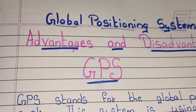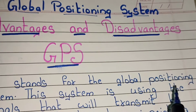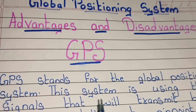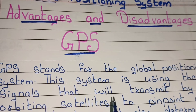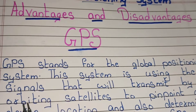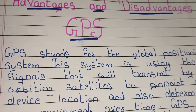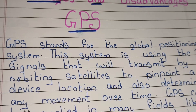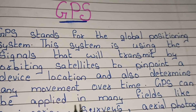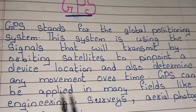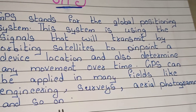GPS stands for the Global Positioning System. This system uses signals transmitted by orbiting satellites to pinpoint a device's location and also determine any movement over time. GPS can be applied in many fields like Engineering, Surveys, Aerial Photogrammetry, and so on.